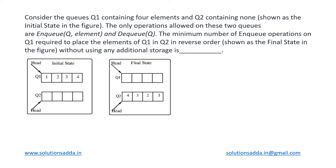This is a data structures question based upon queues. We have been given two queues, Q1 and Q2. Q1 is initially having the elements 1, 2, 3, 4 in this order, and we have to put all of them into Q2, which is initially empty, in the reverse order: 4, 3, 2, and 1. The allowed operations are NQ and DQ on both queues. We have to determine what is the minimum number of NQ operations required on Q1 to get this as the final result.